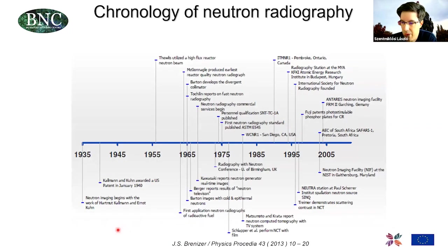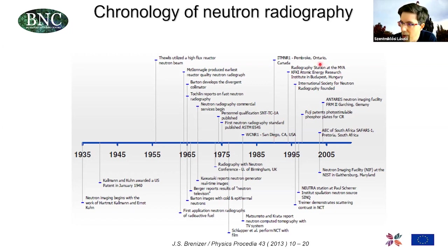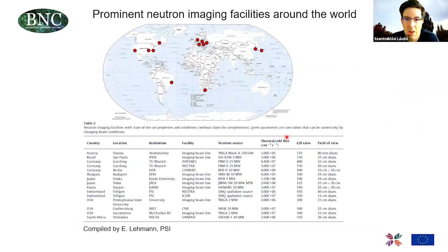Neutron radiography has a quite long history dating back to the 1930s, and it became a major technique in the 1960s and 70s, while gaining significance later in industrial routine applications. Our facility was also mentioned as a milestone in the development of neutron radiography. Presently there are not too many neutron imaging facilities worldwide — the leading facilities are concentrated in Europe, the United States, and Asia.